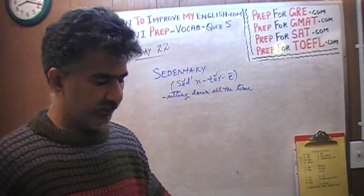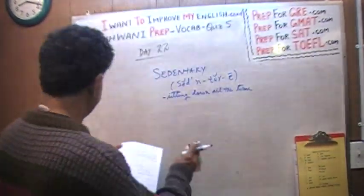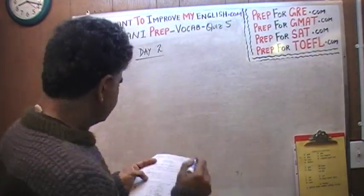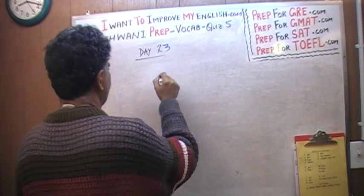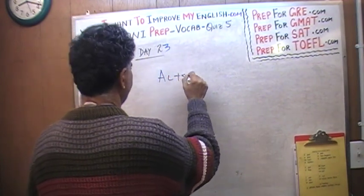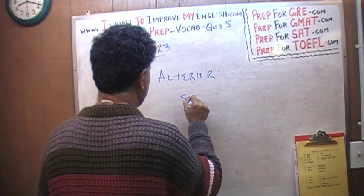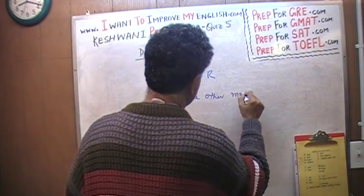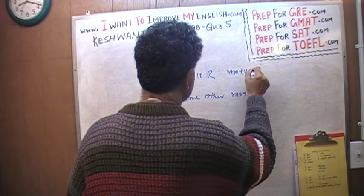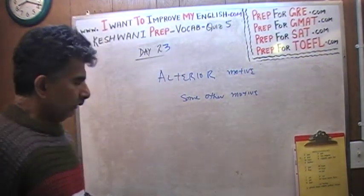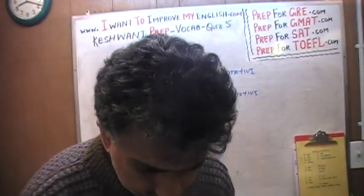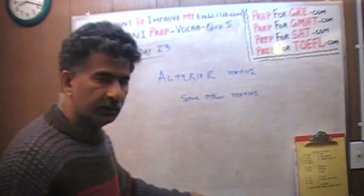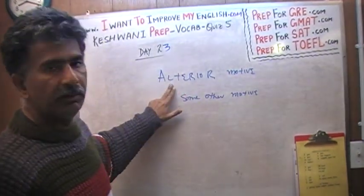Let's move on to day number 23. The very first word we learned on day 23 was 'ulterior.' When you hear the word ulterior, it is usually used with the word 'motive' — people talk about ulterior motive.